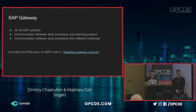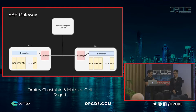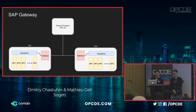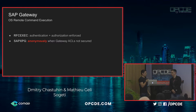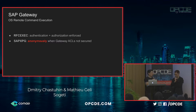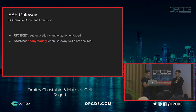Different application servers may have different logic and work processes, but all communication goes through the gateway. There is a vulnerability in the SAP gateway that leads to remote code execution. There are two legitimate ways to execute OS commands through the gateway: RFC_EXEC, which requires authentication, and SAP_XPG, which only requires a record in an ACL list. If the ACL list is empty, operating system commands can be executed anonymously without any authentication.